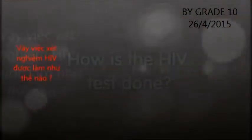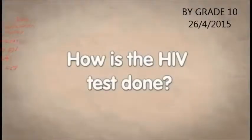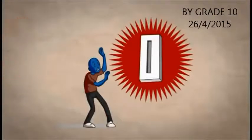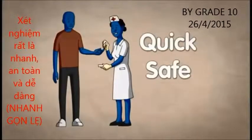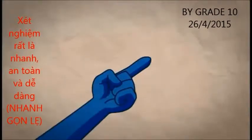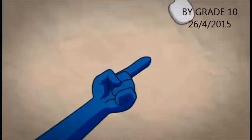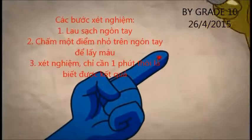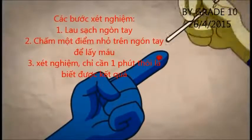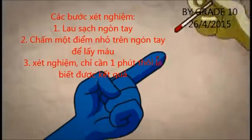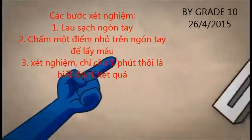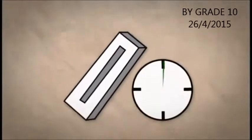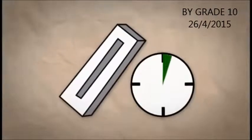How is the HIV test done? The HIV test isn't nearly as scary as many people think. The test is quick, safe, and easy. Your finger is cleaned and a brand new needle is used to make a small finger prick. The needle is only used once and then thrown away. The rapid HIV blood test only takes minutes to give results, so you soon know your status.